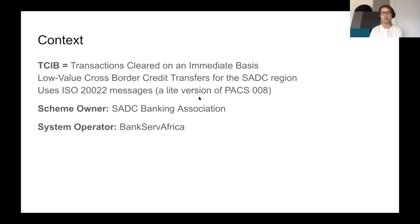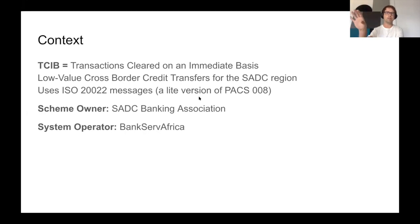The operator is BankServe Africa, who are a regional clearinghouse — a South African domestic clearinghouse that also does a lot of regional clearing. Most importantly, and part of the main reason for this POC, is that TCIB is designed to use ISO 20022 messaging. It uses a live version of the Pax Series 8 message, which is the customer-initiated credit transfer message. What we want to evaluate is how we connect the TCIB system using that message format to the Mojaloop system, which is not using ISO 20022, and whether there are any issues.